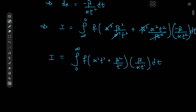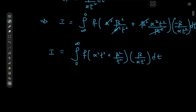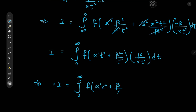Since the dummy variable name doesn't matter, we could take both forms of the integral I and add them together. By that token we would have 2 times I equal to the integral from 0 to infinity, where we factor out f of alpha squared x squared plus beta squared divided by x squared, and we're left with 1 plus beta divided by alpha x squared dx.